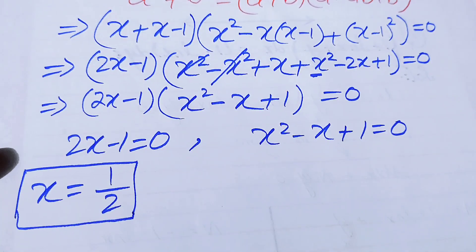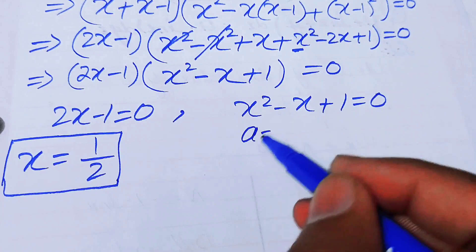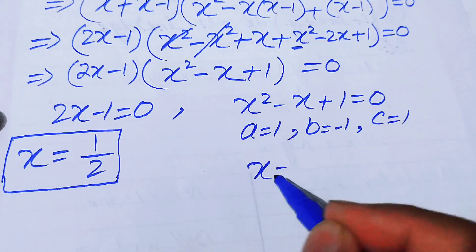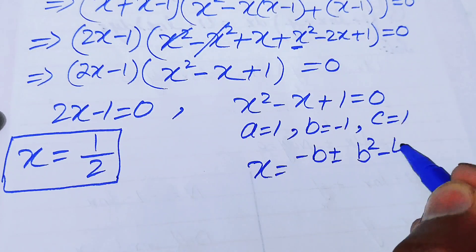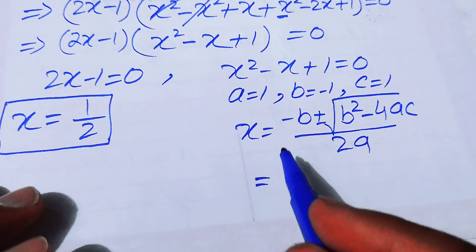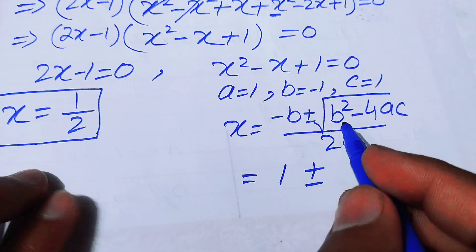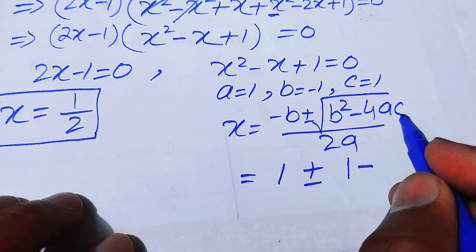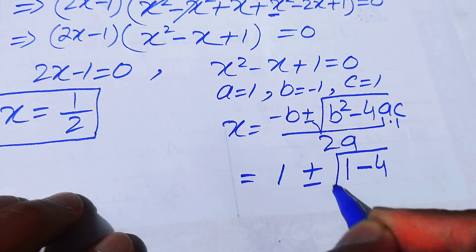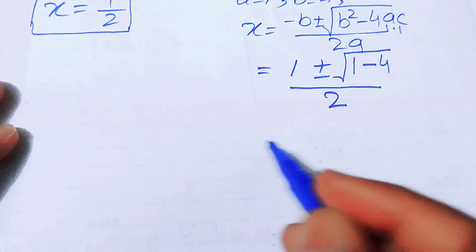x = 1/2 is the third root of the equation. For x²−x+1 = 0, we apply the quadratic formula with a = 1, b = −1, c = 1: x = (1 ± √(1−4)) / 2 = (1 ± √(−3)) / 2.